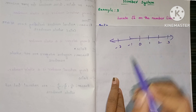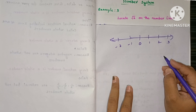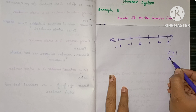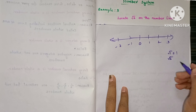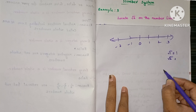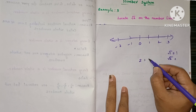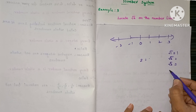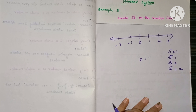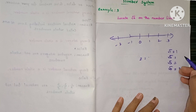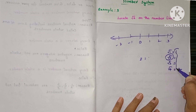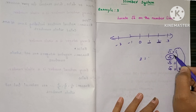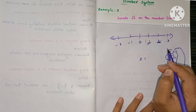Now you have to represent root 2 on the number line. You know root 1 equals 1, and root 2 is not a perfect square — we cannot write 2 as the square of any number. Root 3 is also not a perfect square, and root 4 is 2. So the value of root 2 clearly lies between 1 and 2, meaning on the number line root 2 lies between 1 and 2.